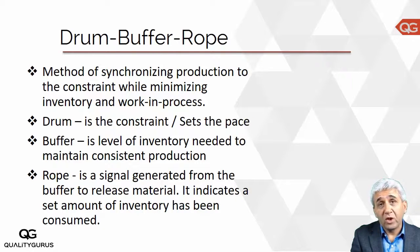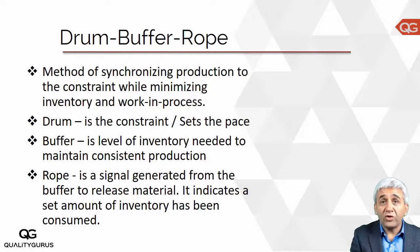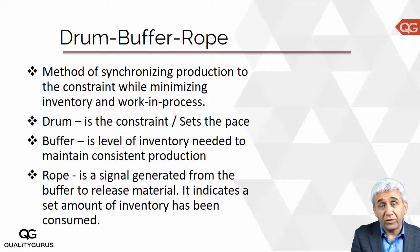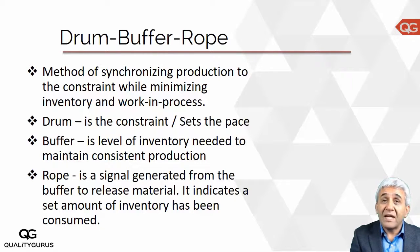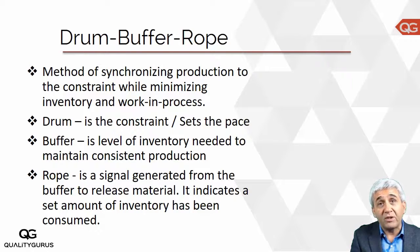When we say constraint, it is something which decides the throughput of the overall process — something which is restricting it. In our example of three machines making 60, 30, and 60 pieces per hour, the second process at 30 pieces per hour was the constraint. That is something which we need to make sure doesn't stop — that process should be working at its best efficiency.